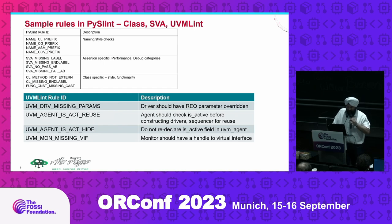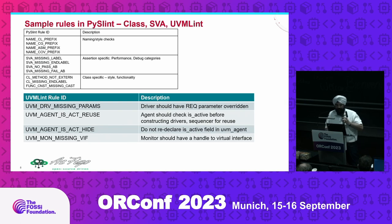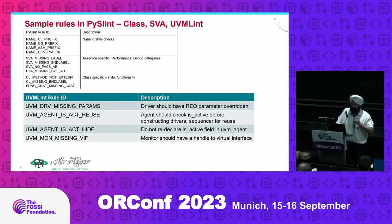These are sample rules we have — for class prefix, cover group, ASM prefix, and coverage prefix. These all come from the verification team leader side, but we can add more. Also for SVA, we have missing labels, low pass, missing fail bound range, class methods which can be non-external, and missing casting for the UVM side. There are some UVM linting rules that are very hard to find when you go deep into verification, but you can easily find them in the initial coding itself, which can reduce your coding time. For example, a driver should have a request parameter overwritten.